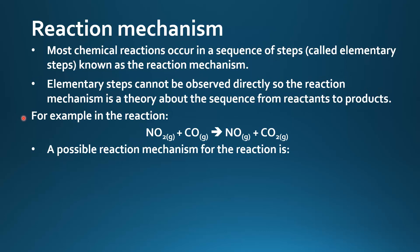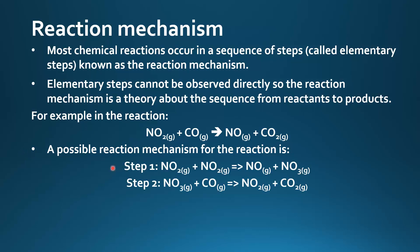For example, in the reaction nitrogen dioxide plus carbon monoxide yields nitrogen monoxide plus carbon dioxide. A possible reaction mechanism for the reaction is step 1: nitrogen dioxide reacting with another molecule of nitrogen dioxide to give nitrogen monoxide and nitrogen trioxide.